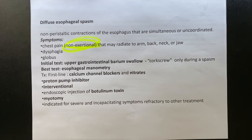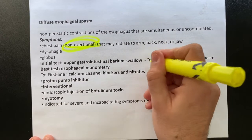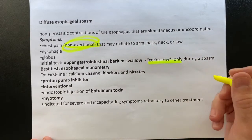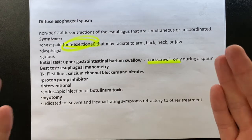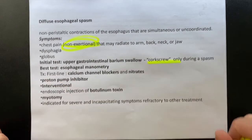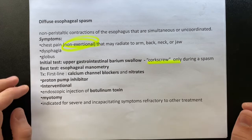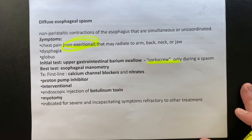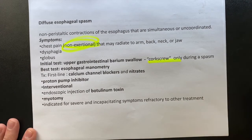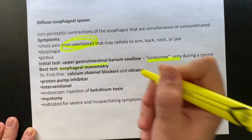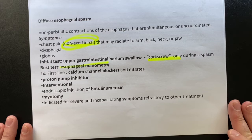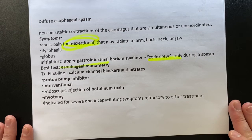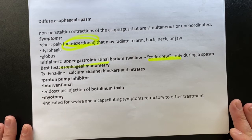The initial test for esophageal spasm is typically a barium swallow, which will show a corkscrew appearance — but only during the spasm. When you do this test without the patient having a spasm at that moment, the barium swallow will be completely normal. The best test is esophageal manometry, which will help measure the pressure in the esophagus.